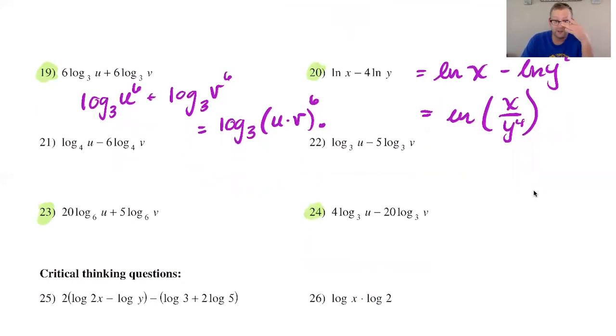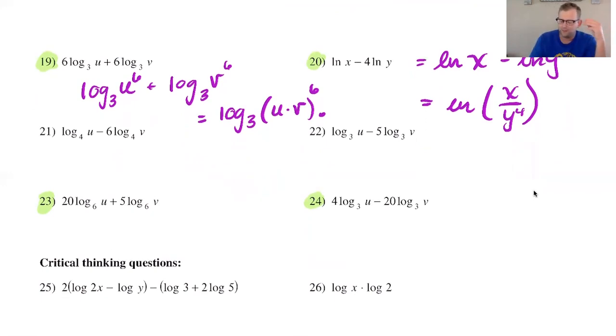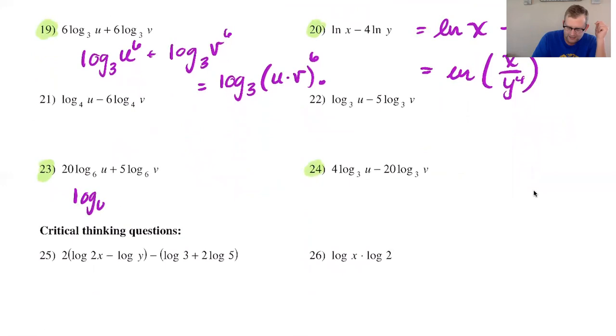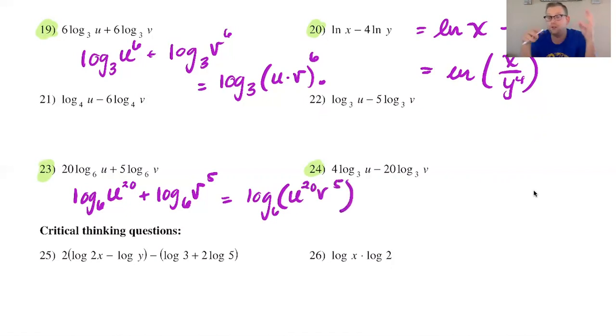All right last two, so I recognize in number 23 that they both have the same base so I will be able to combine them but they do have two different coefficients so I'm not going to try to do anything fancy with that. I'm just going to do u to the 20 plus log 6 v to the 5 and since this is a sum of two logs, I have the same base then I can combine them and I'll have a log base 6 of u to the 20 v to the fifth. And no you cannot combine that any further because u and v are both of different bases so that's it.